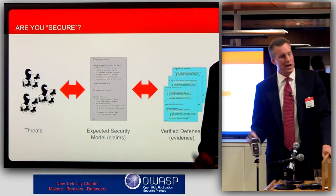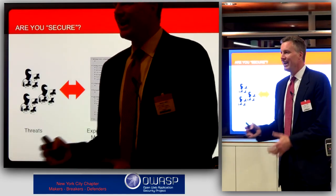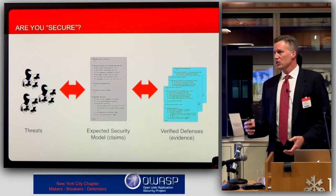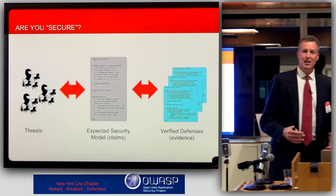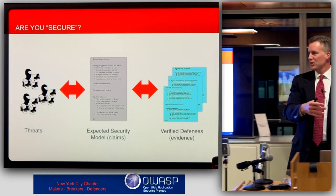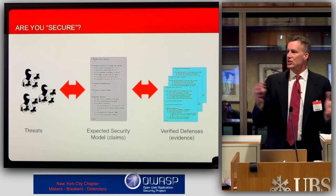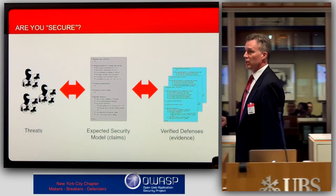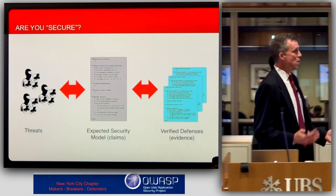The question demands that you define what security means. You have to say what your expected security defenses are in order to say whether you've got them and whether they're any good. In most organizations you've got policies, security requirements, pen test tools with a certain rule set, threat models, maybe some architectures. All these things really boil down to what I'm calling an expected security model. If you want to ever say that you're secure, you've got to have one, because you're secure relative to some kind of model of what you mean by security. Most organizations don't — they haven't thought this through.